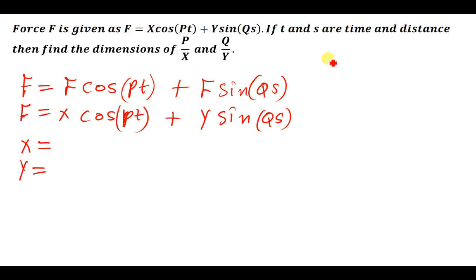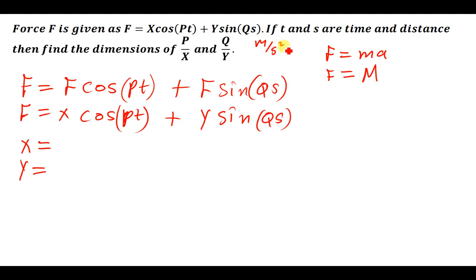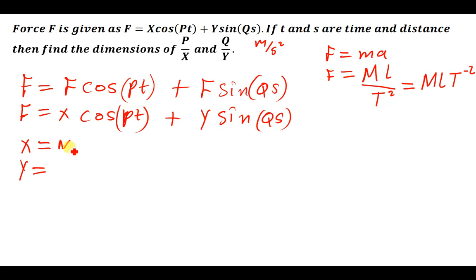Let us find the dimension formula for force. Force is given by mass times acceleration. In dimensional analysis, mass is represented by M. The units for acceleration are meters per second squared — meters is the length L, and seconds squared is time squared T², so the dimension formula for force is MLT⁻². Therefore, x and y both have dimensions MLT⁻².